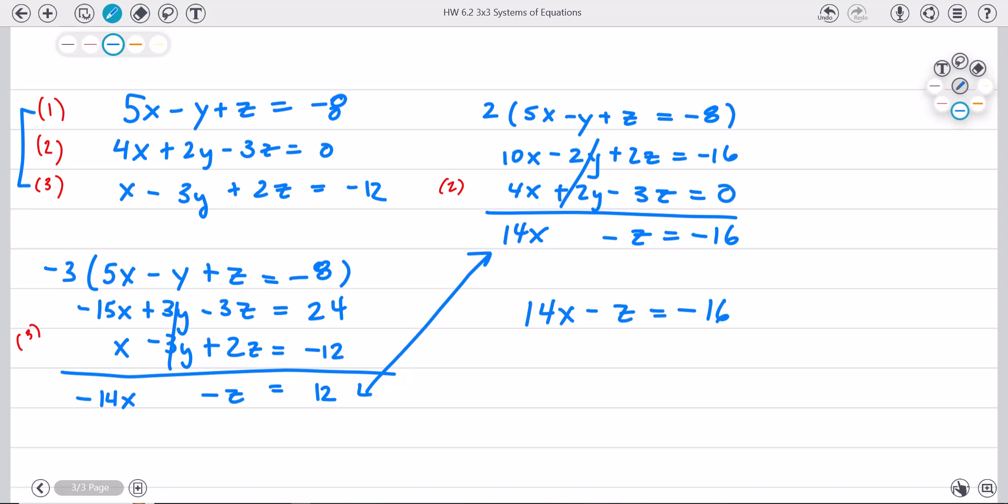And I'm going to multiply this first one by negative one. So I guess I'll do it over here. Negative one times fourteen x minus z equals twelve. So negative times a negative is going to give me a positive fourteen x.